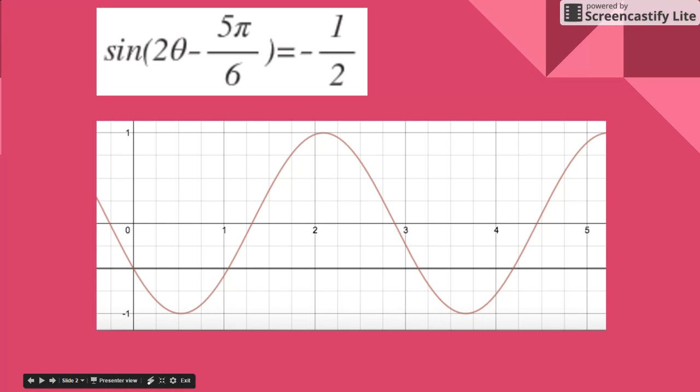So the equation we're going to be solving is the sine of 2θ minus 5π over 6 equals negative 1 half. The first thing we did is we drew a graph of the sine of 2θ minus 5π over 6. That's the right curve right there. And you notice it's going from a period of 0 to 2π approximately, like a little less than 2π.